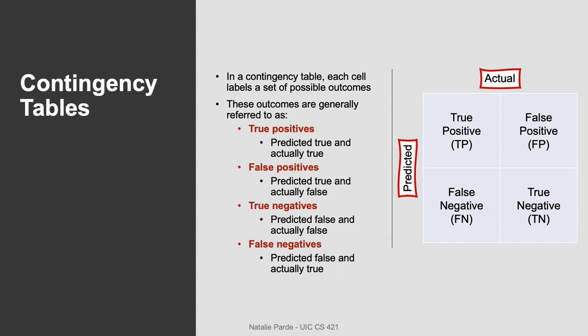The four quadrants of our confusion matrix correspond to true positives, which are instances predicted to belong to the true class and that actually are in that class; false positives, which are instances predicted to belong to the true class but actually aren't; true negatives, which are instances predicted to belong to the false class and actually are in that class; and false negatives, which are instances predicted to belong to the false class but are actually true.